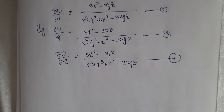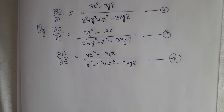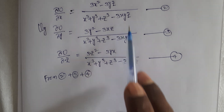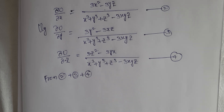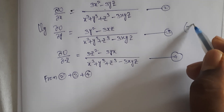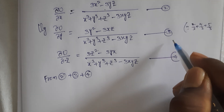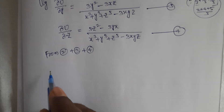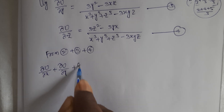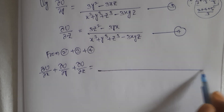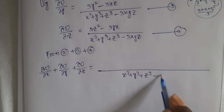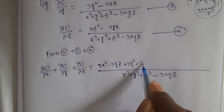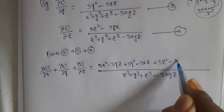We need to add equations 2, 3, and 4. Since the denominator is the same, ∂u/∂x + ∂u/∂y + ∂u/∂z equals, over the common denominator (x³ + y³ + z³ − 3xyz), the numerator: 3x² − 3yz + 3y² − 3xz + 3z² − 3xy.